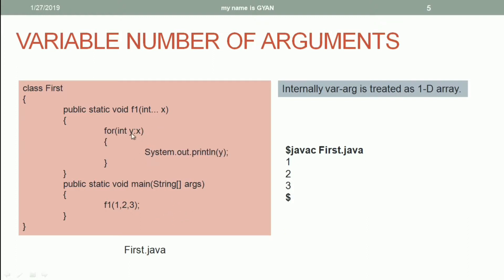This is another example where we use the array x, because internally the variable number of arguments is treated as an array. We use the array x in an enhanced for loop to extract all elements one by one, storing each into the integer variable y, then printing y. That's how it will print 1, 2, and 3.